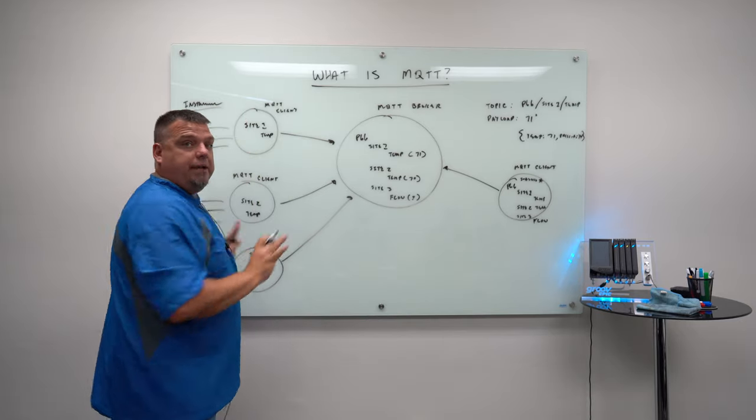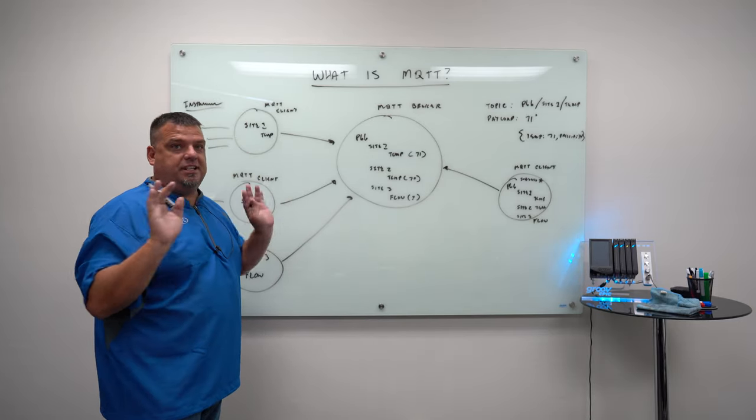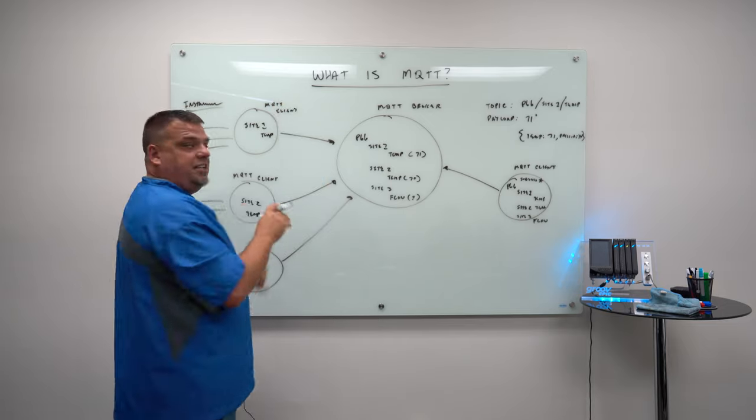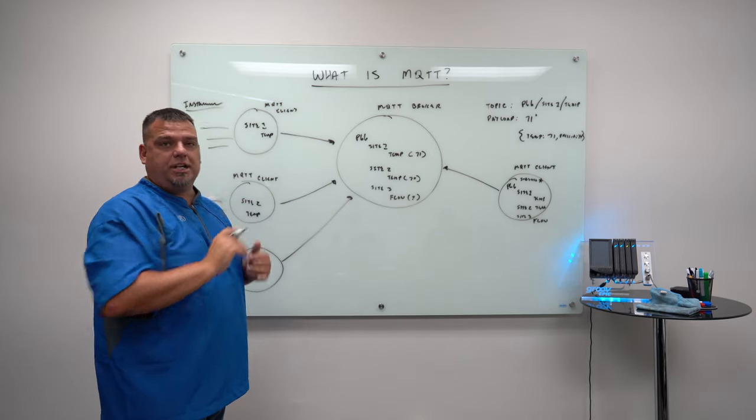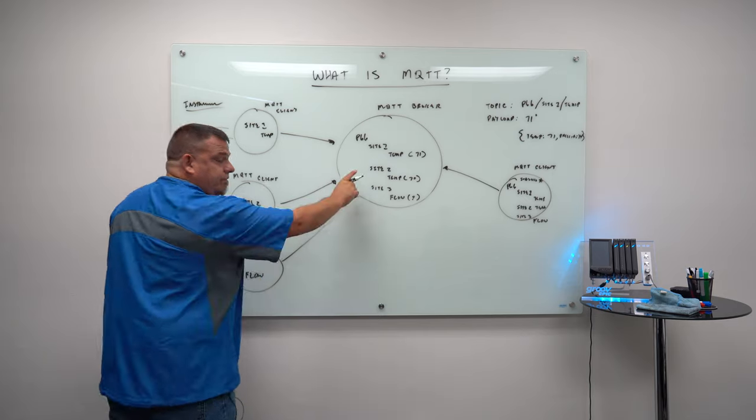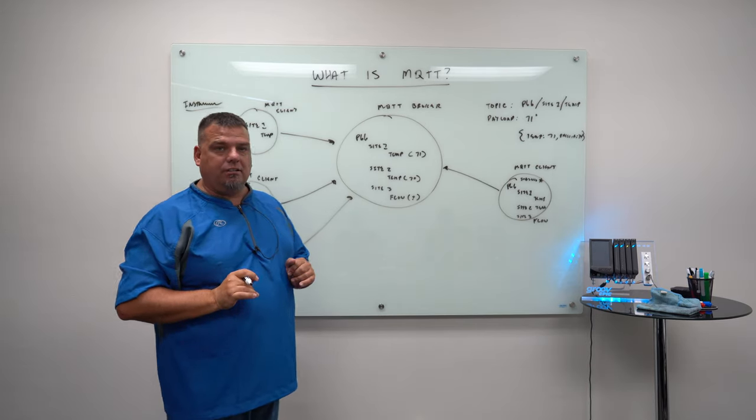So that is your core MQTT. What is MQTT? The key elements. MQTT is messaging queue, message queue, transport telemetry. It is a lightweight, edge driven report by exception protocol.